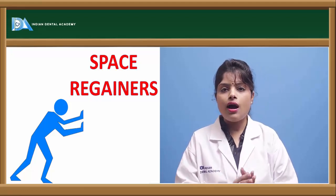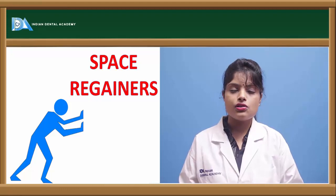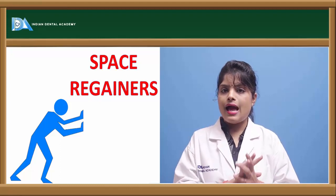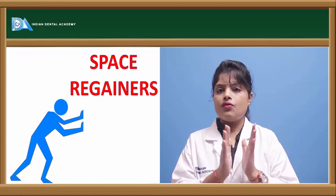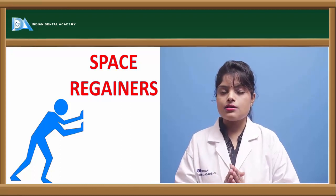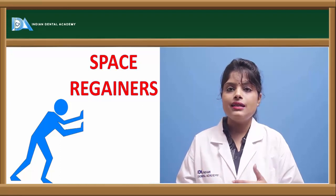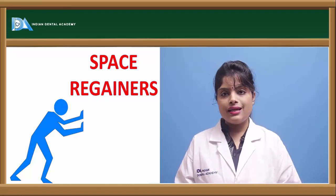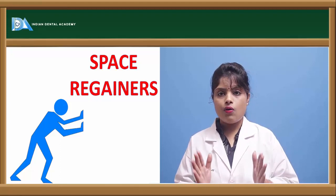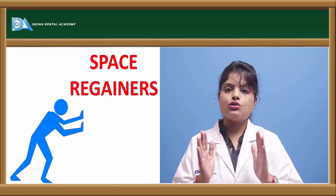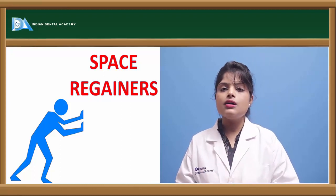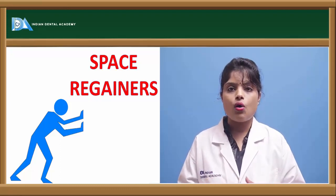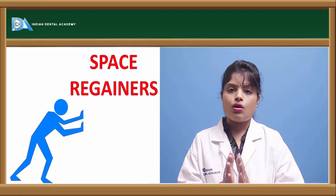Let's discuss what space regainers are and their functions, as well as the various types. Space regainers, as the name suggests, aim at regaining lost space. Space can be lost due to early loss of primary teeth. For example, early loss of the primary first or second molar causes adjacent teeth to tip into the space created, hampering eruption of the succedaneous premolars into the oral cavity.